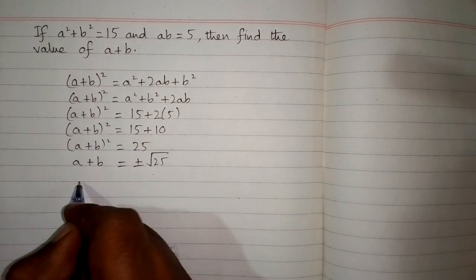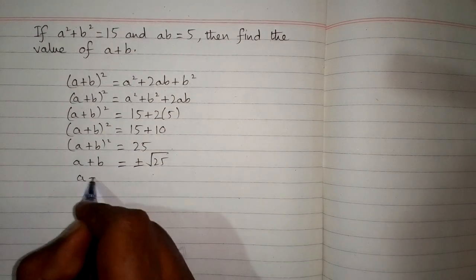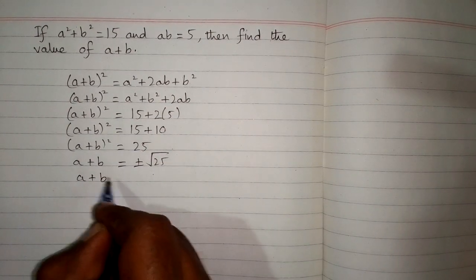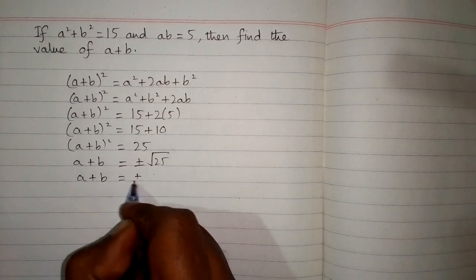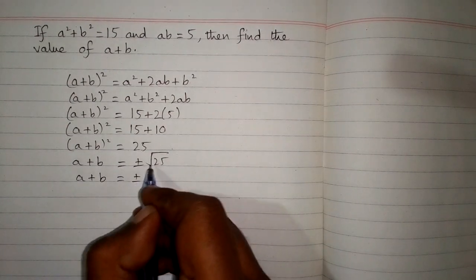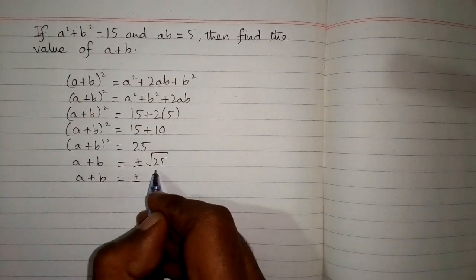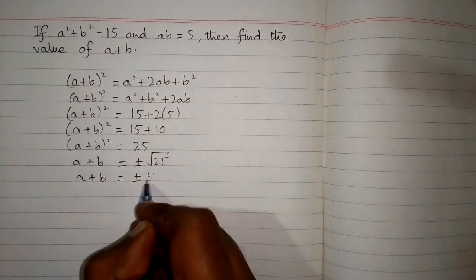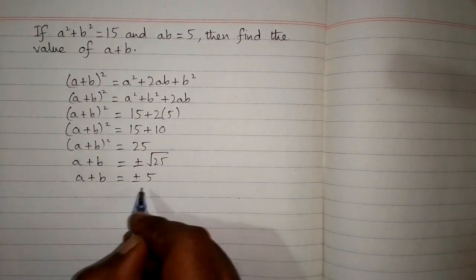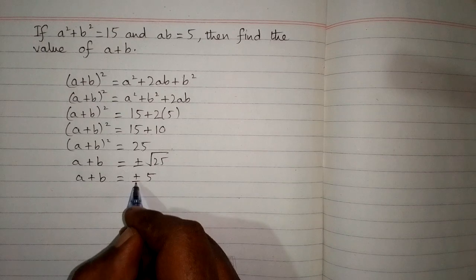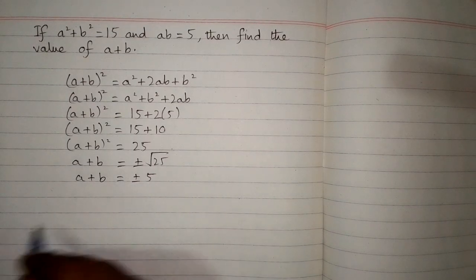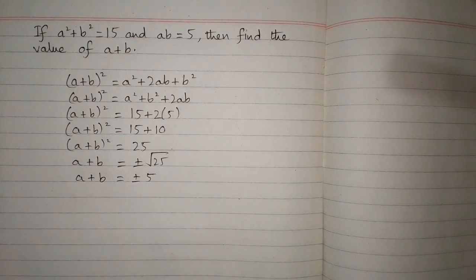The value of a plus b is equal to plus or minus the square root of 25, which is 5. So we have plus or minus 5, and this is the required answer.